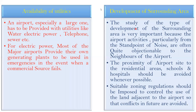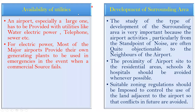The next criterion is availability of utilities. An airport, especially a large one, must be provided with utilities like water, electric power, telephone, and sewer lines. For electric power, most major airports provide their own generating plants to be used in emergencies when the commercial source fails. Telephone and sewer lines also play a very important role.